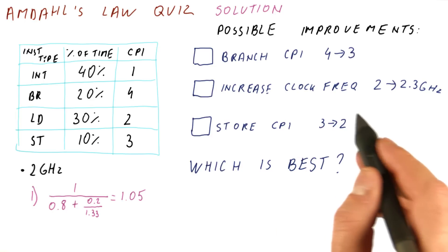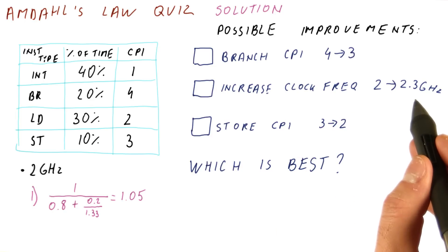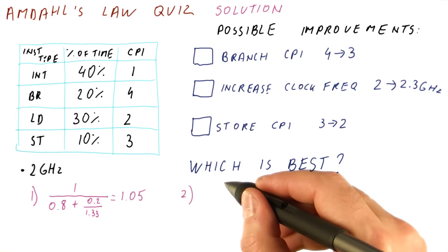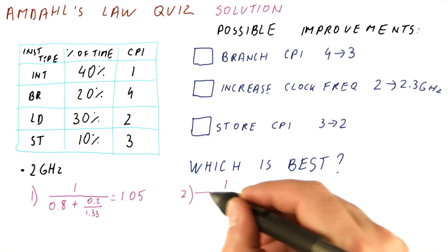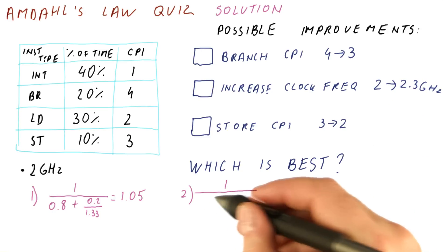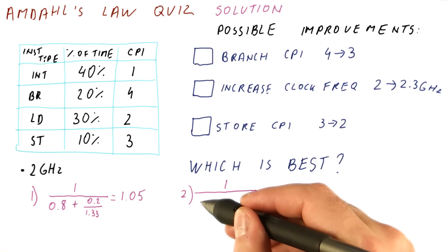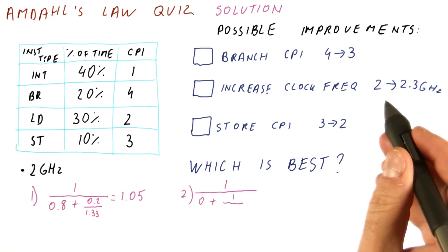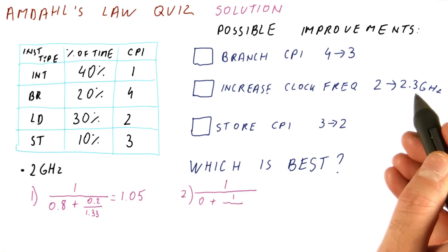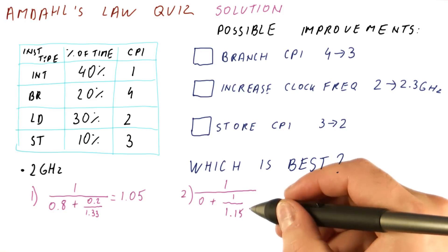The clock frequency increase from 2 to 2.3 gigahertz is affecting all of the execution time. So we can just compute the speedup of this. But for the sake of exercise, let's apply Amdahl's law. 1 minus fraction enhanced is 0, because everything is enhanced. The fraction enhanced is 1. And the speedup we get here, by going from 2 to 2.3 gigahertz, is 2.3 over 2, which is 1.15. And the overall speedup we get is 1.15.